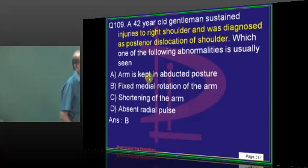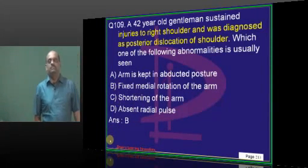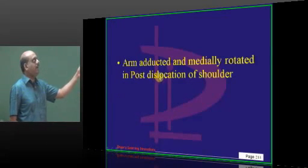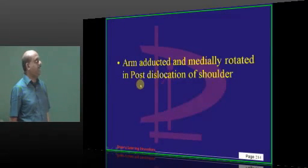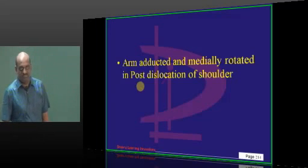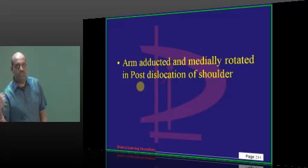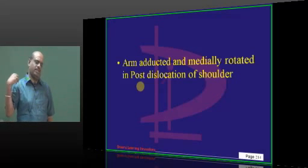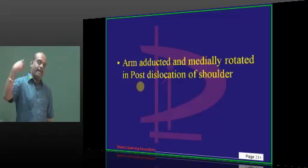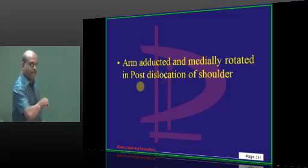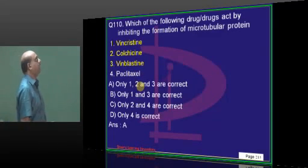42-year-old with right shoulder injury leading to posterior dislocation. In posterior dislocation, the arm will be adducted and medially rotated, and it is difficult to abduct or externally rotate it — that leads to pain. That is how you recognize posterior dislocation of the shoulder. Anterior dislocation is more common. In epileptic seizures, posterior dislocation may occur with the arm adducted and internally rotated.